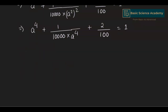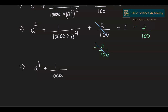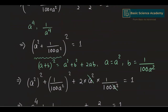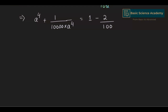Subtracting 2/100 from both sides, the plus 2/100 and minus 2/100 cancel on the left, leaving a⁴ plus 1/(10,000a⁴) equals 1 minus 2/100. Previously we found that 1/u equals a⁴ plus 1/(10,000a⁴), so this expression is our 1/u value.